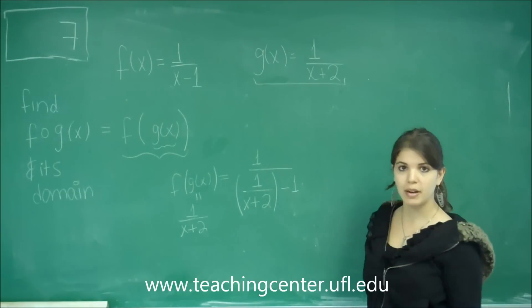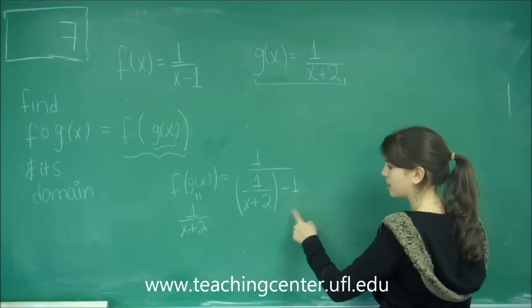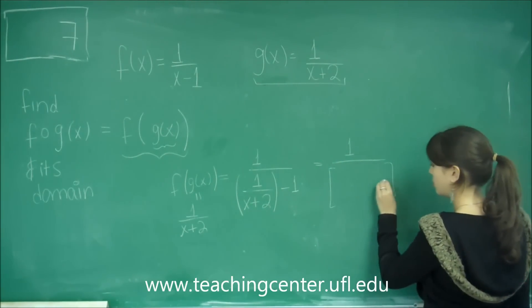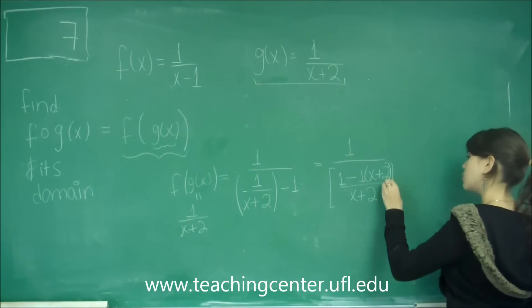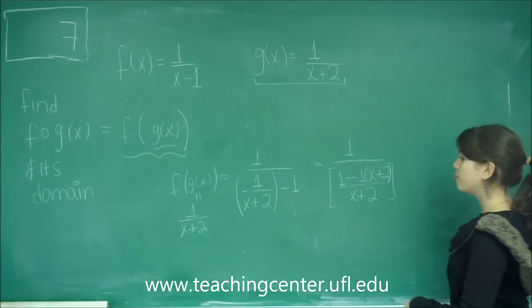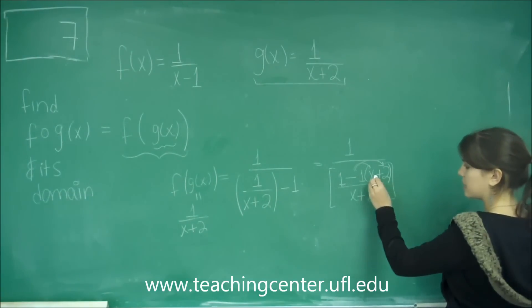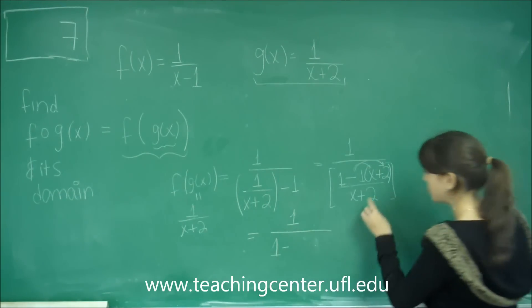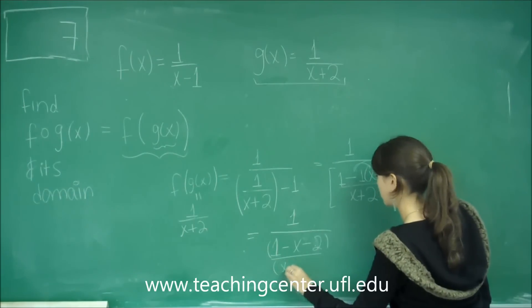Now from here on it's just a matter of simplifying. Since we don't want a fraction in the denominator we're going to combine this using a common denominator. The common denominator is going to be x plus 2. So we have 1 minus 1 times x plus 2. Make sure that whenever you do this you leave it in the parenthesis and distribute this negative sign. Then you get 1 minus, distributing this negative we get negative x, negative 2, over x plus 2.